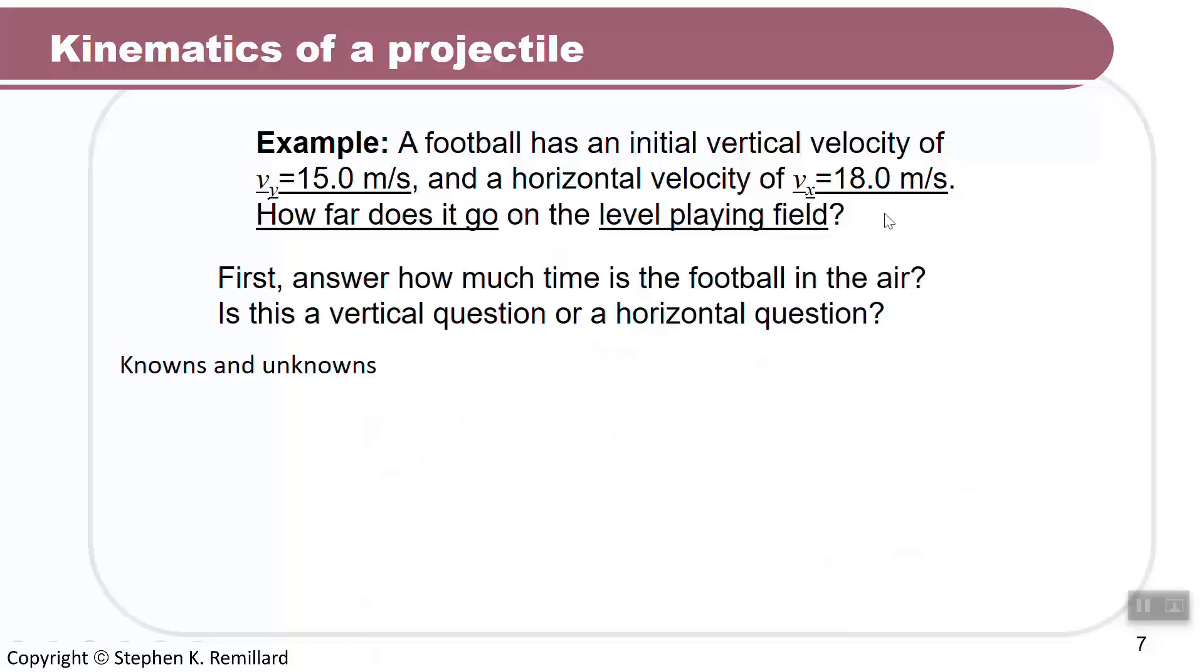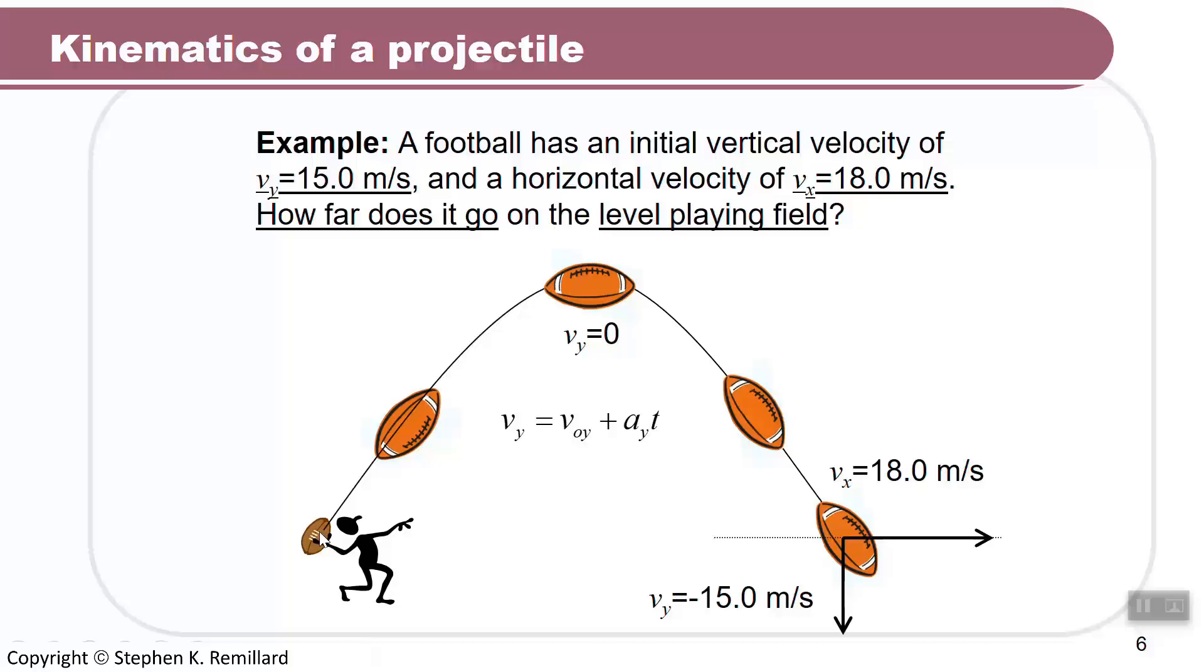Before we can answer how far it goes, we have to first know how long this football is in the air, for how much time exactly. So let's go back to the picture and let me ask you, if I want to know how much time the football spends going up and coming back down, is that a vertical question or a horizontal question? Because all projectile motion problems, which are clearly two-dimensional problems, are a combination of a horizontal problem and a vertical problem. The vertical problem includes acceleration due to gravity. The horizontal problem is at constant speed. So do you answer the question of how far it was in the air with a vertical or a horizontal problem?